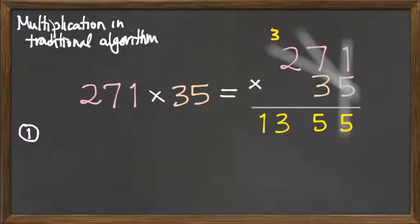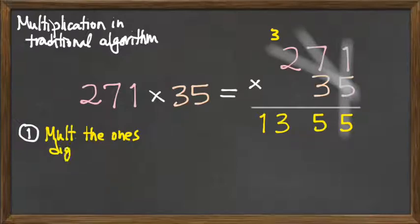Then what happens? So here what we did to start was we multiplied the ones digit by every digit in the other factor.